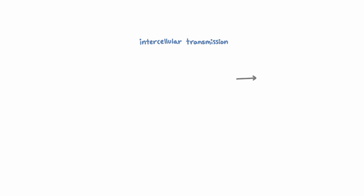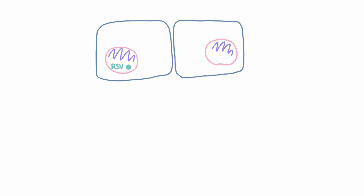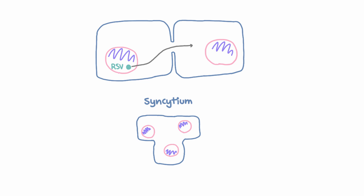Now what is intercellular transmission? Well, that means that RSV can spread directly from one cell to its neighbor by causing the cells to fuse. And this actually explains the name, respiratory syncytial virus, because a syncytium is a multi-nucleated cell made by fusion of a bunch of cells. When RSV is replicating in the lower respiratory tract, traveling from cell to cell, it can cause cells to fuse entirely, forming syncytia.